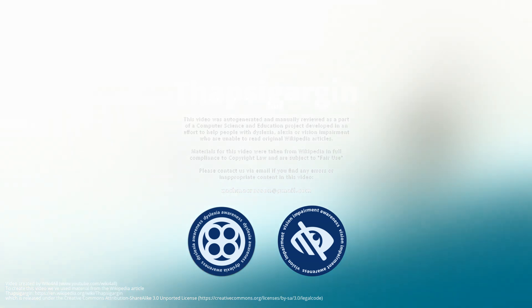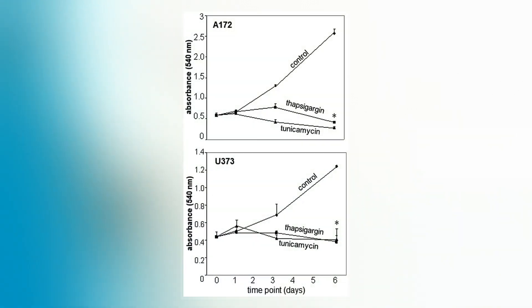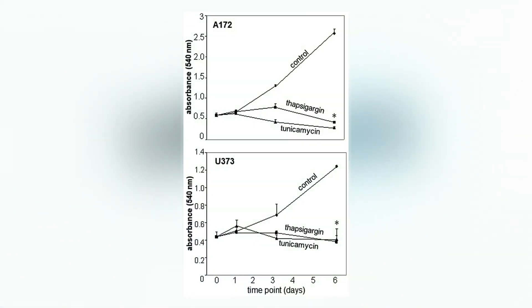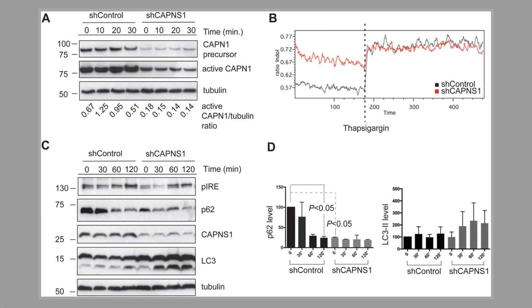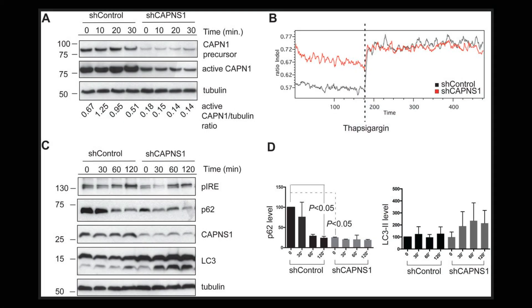Thapsigargin is a non-competitive inhibitor of the sarco-endoplasmic reticulum CA2+ ATPase. Structurally, thapsigargin is classified as a sesquiterpene lactone and is extracted from the plant Thapsia garganica. It is a tumor promoter in mammalian cells.